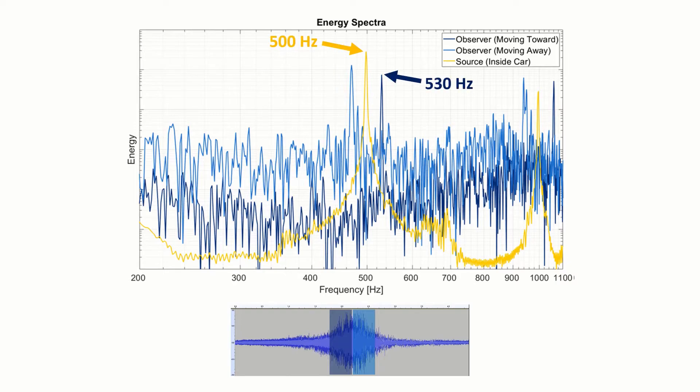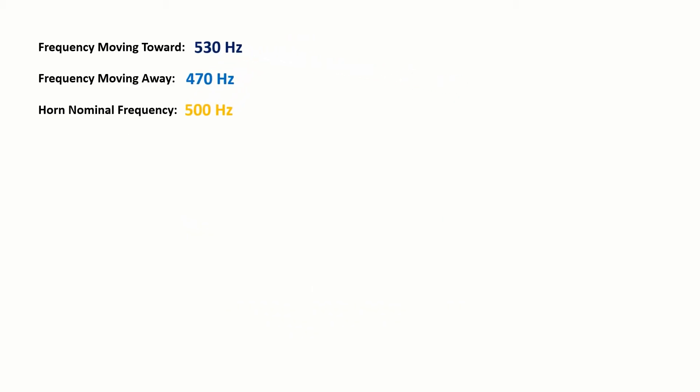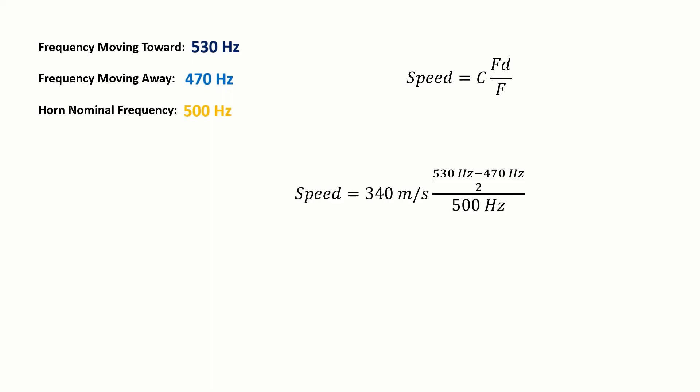While the frequency when the car was moving toward the observer is higher at 530 hertz, and when it was moving away it was lower at 470 hertz. With these frequencies we can use this equation to estimate the speed of the car. C represents the speed of sound in air, which is approximately 340 meters per second. Fd is the difference between the two frequencies, which we also divide by two because the observer first hears the sound coming toward it and then again when moving away.